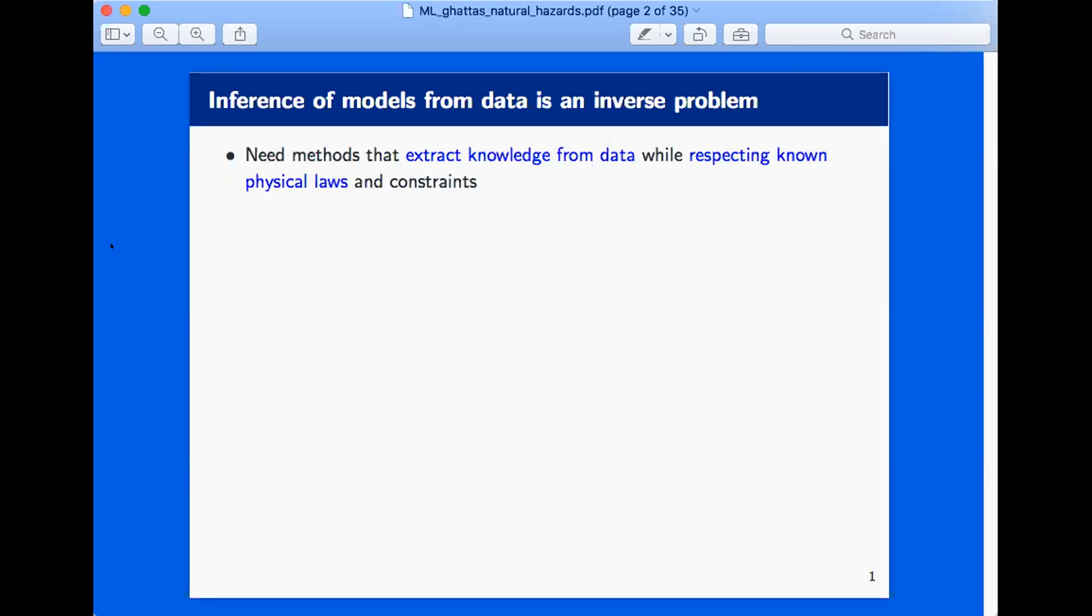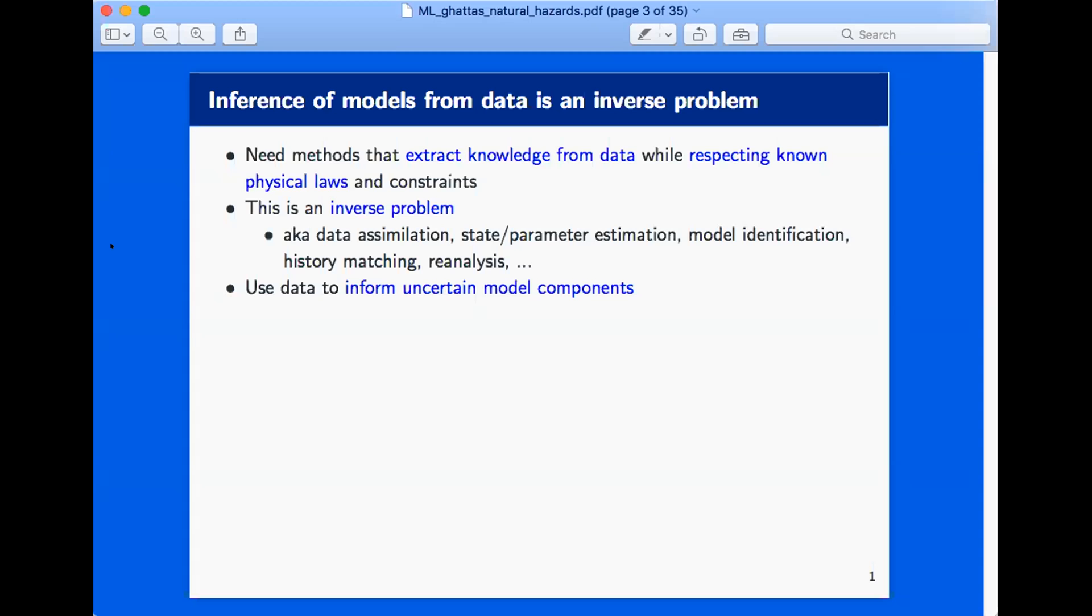That's the general notion of inference of models from data. You need to extract knowledge from data while respecting known physical laws and constraints. This is an inverse problem. It goes by different names in different communities: data assimilation, state parameter estimation, model identification, history matching if you're a petroleum engineer, reanalysis. Each has a slightly nuanced meaning, but the basic idea is you're going backwards from data to inputs into a model, which could include model structure.